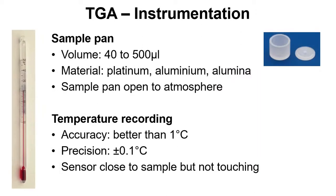The sample pan volume typically is between 40 to 500 microliters. We can use different materials like platinum, aluminum, or alumina, and the sample pan is open to the atmosphere to allow any gases to escape that are being evolved from our solid material.